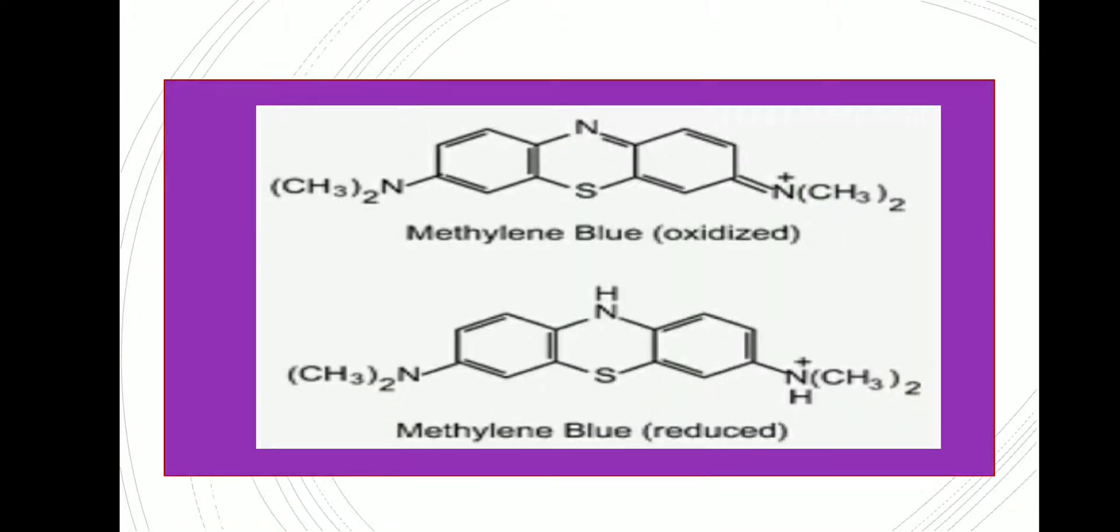Methylene blue when oxidized has the blue color, but when reduced it is in the leuco or colorless form. The oxidation of nutrients causes the liberation of hydrogen plus electrons, and these are accepted by the methylene blue and get reduced to its leuco form.